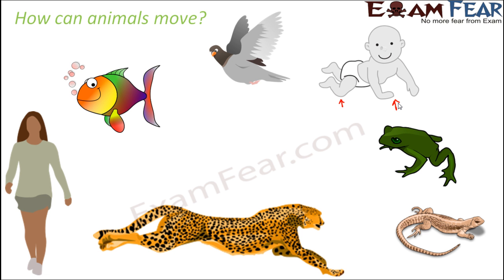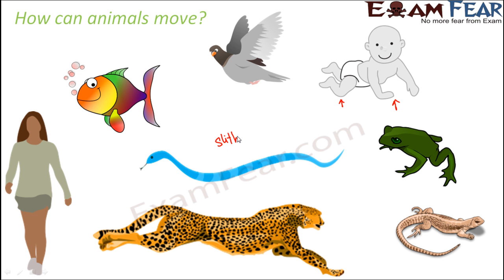Think of an organism like a lizard — the wall lizard moves by creeping, climbing the wall. That kind of movement is called creeping. Think of a snake — its movement is quite different from other animals, and this movement of a snake is often termed slithering.